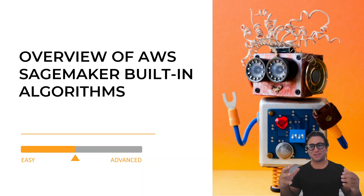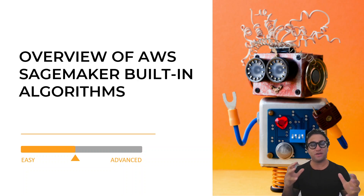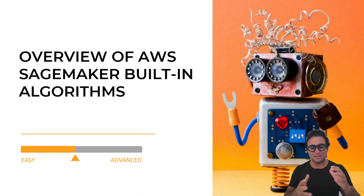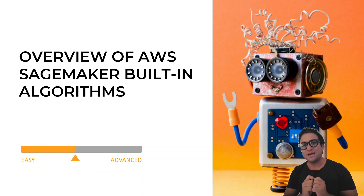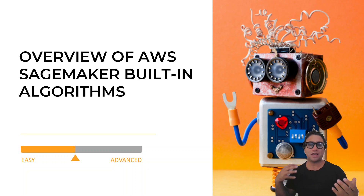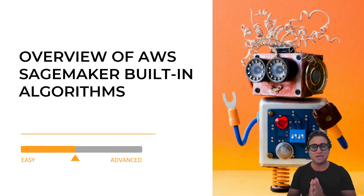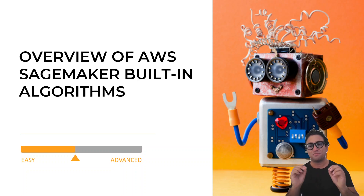Hello everyone and welcome to this lecture. In this lecture, we are going to cover an overview of AWS SageMaker built-in algorithms. Please note that in today's project, we are going to build a machine learning regression model and we're going to leverage AWS SageMaker built-in algorithms. The algorithm that we're going to use today is known as Linear Learner. But before we jump into the details of Linear Learner — how does it work and how we can train it in SageMaker — I just wanted to provide an overview of AWS SageMaker built-in algorithms.